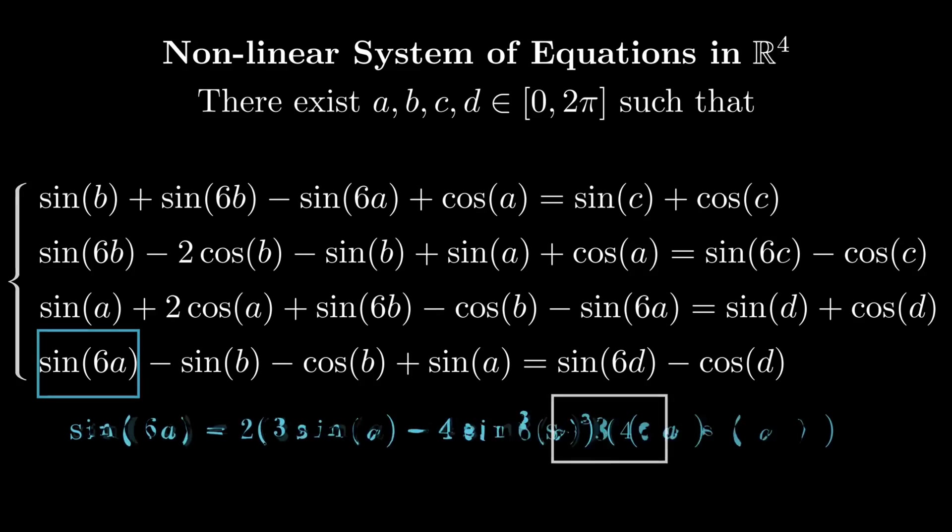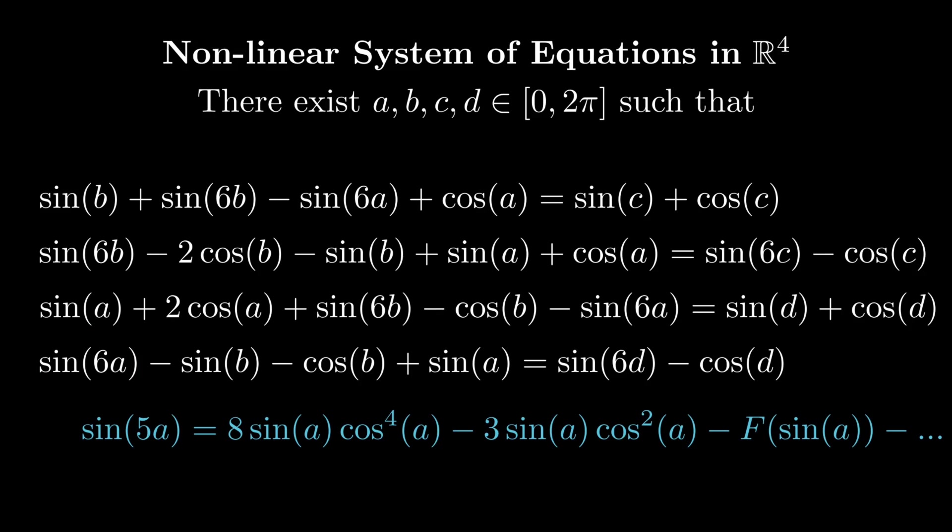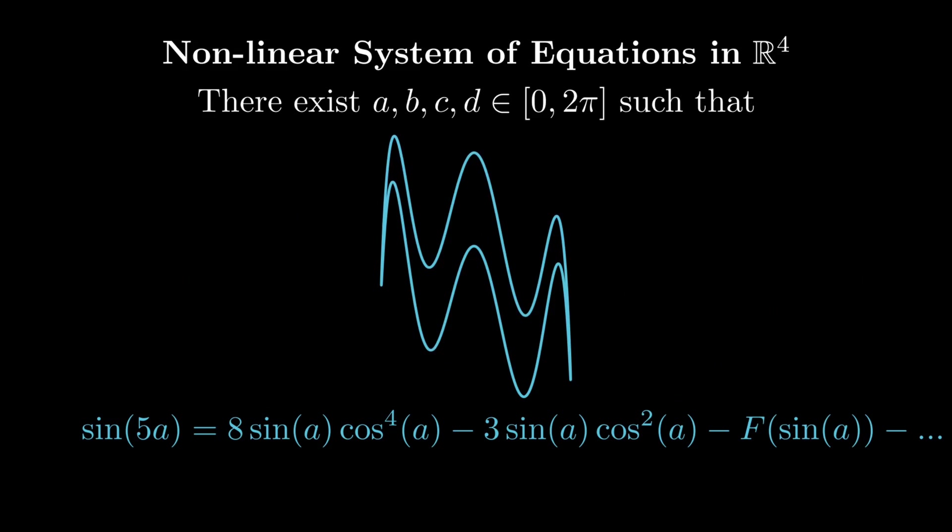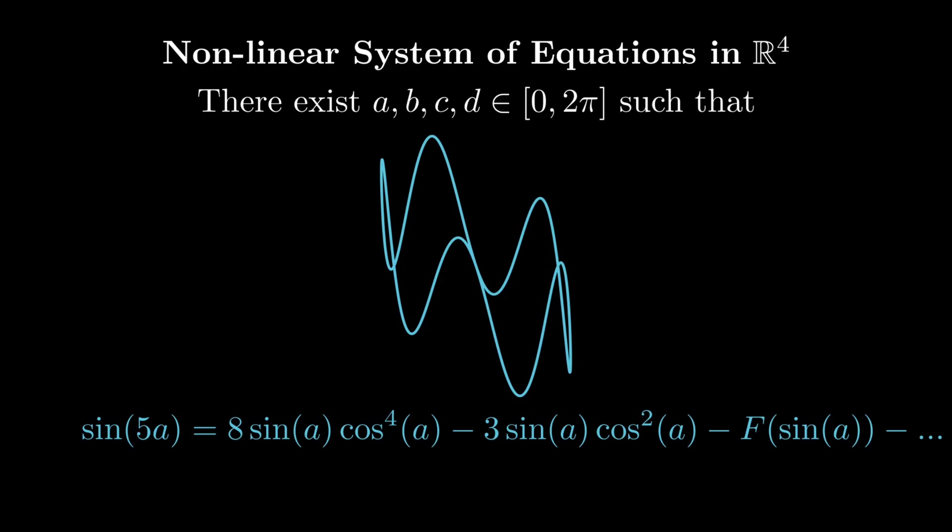On the other hand, if we have sin of 5a, then we do get a polynomial with cos a an even degree. However, the corresponding curve is not simple, meaning it intersects itself.